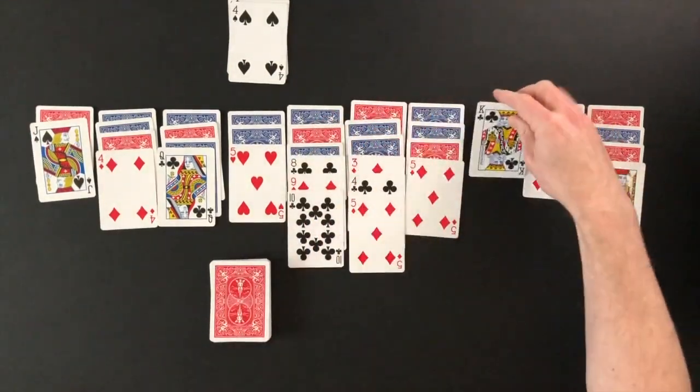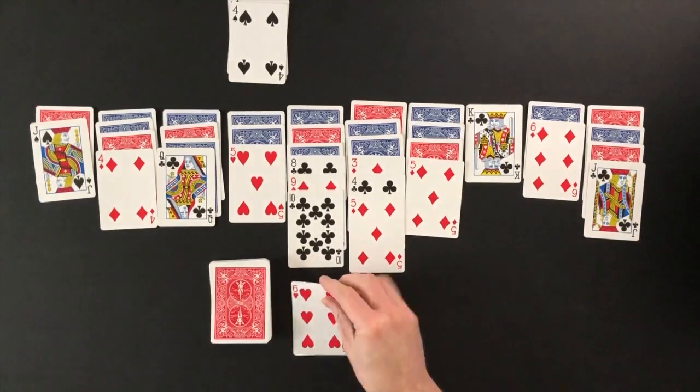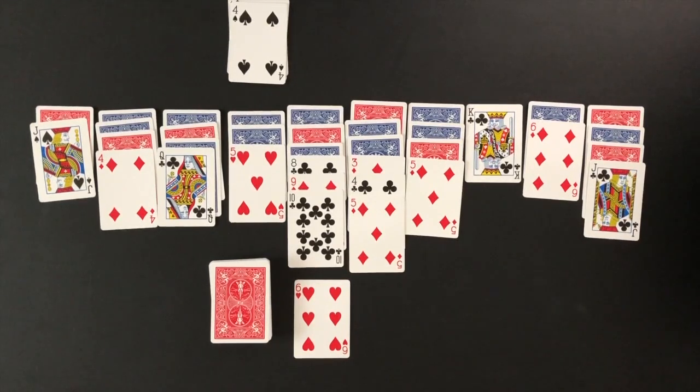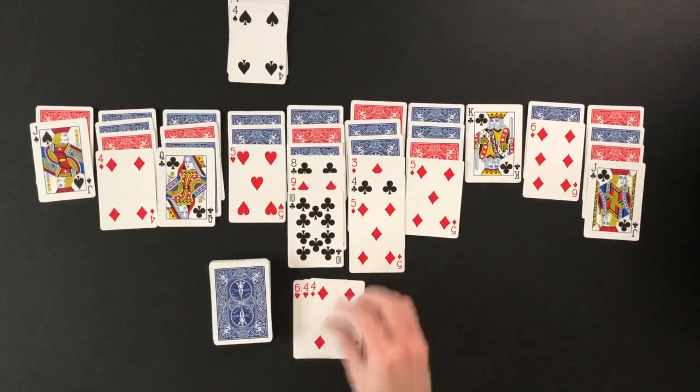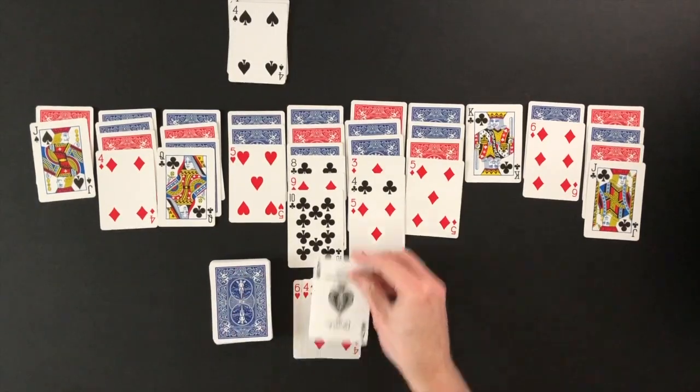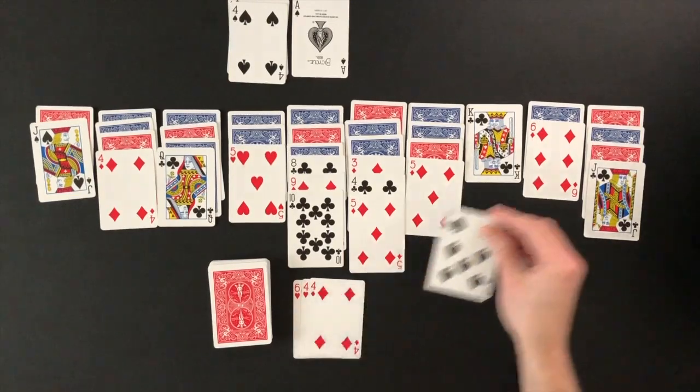Once no more moves can be made in the layout or a player chooses to make no more moves, cards can be played from the deck. The top card of the deck is flipped up and forms a waste pile. A player will go through the deck one card at a time. A card that is flipped up from the deck can be played into the layout or into a foundation pile when possible.